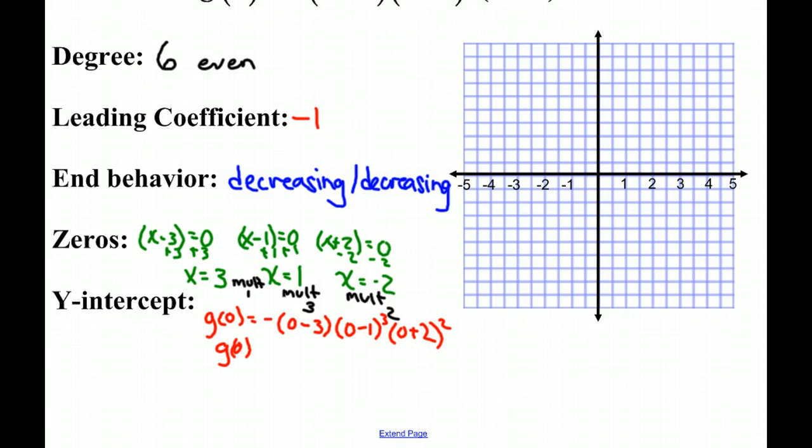So we have negative 0 minus 3 times 0 minus 1 cubed times 0 plus 2 squared. g of zero is negative, then 0 minus 3 is negative 3, 0 minus 1 is negative 1 cubed, and 0 plus 2 is 2 squared.